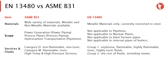The ASME B31 code has different fluid categories — for example, category D for non-flammable and non-toxic fluids, category M for flammable and toxic fluids, and high temperature and high pressure services. The EN 13480 code has two groups: group 1 for explosive, flammable, highly flammable, toxic or highly toxic fluids, and group 2 for the rest of fluids, including steam.